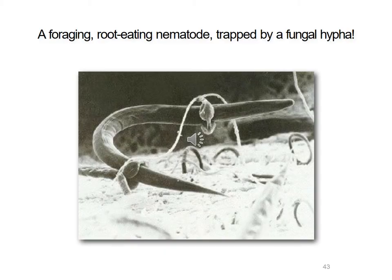One of the secondary consumers in the soil food web is a nematode — that dark roundworm you're seeing. And here is a fungal hypha — part of a fungus — actually trapping that nematode to eat it. Some fungi can help destroy those nematodes that would otherwise damage the roots of the plants you're trying to grow.